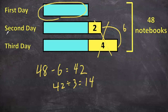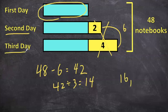And then on the second day he sold two more, so that's going to be two more than 14 — so 16. And then on the third day he sold four more than the first day, so we can just do 14 plus 4 and say 18 is our answer.